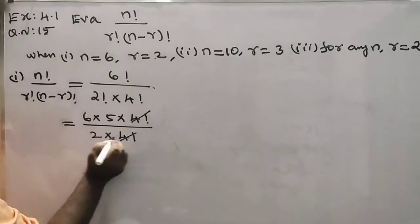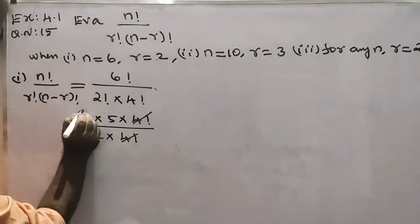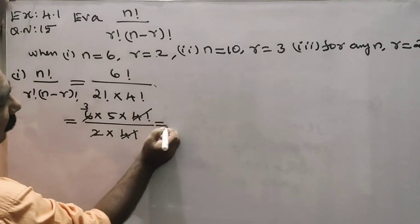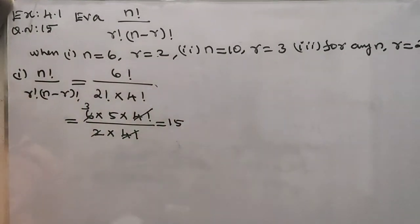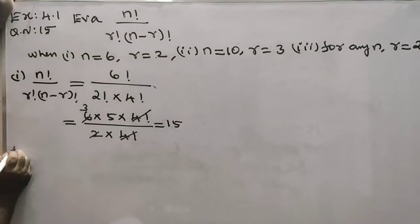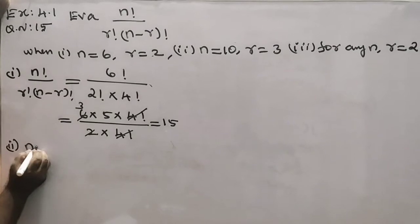The 4 factorials cancel. We get 6 into 5 divided by 2, which gives 3 fives are 15. This is the answer. Next is second problem.